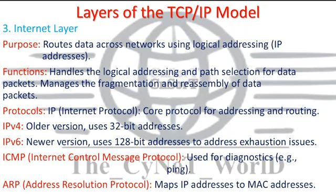Protocols of the Internet Layer: Internet Protocol (IP) — the core protocol for addressing and routing. IPv4 is the older version and uses 32-bit addresses. IPv6 is the newer version and uses 128-bit addresses to address exhaustion issues. ICMP (Internet Control Message Protocol) is used for diagnostics, e.g., ping. ARP (Address Resolution Protocol) maps IP addresses to MAC addresses.